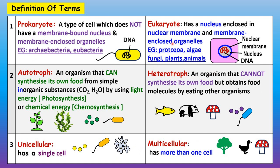We've also discussed the definitions of prokaryote, eukaryote, autotroph, and unicellular versus multicellular. A prokaryote is a type of cell which does not have a membrane-bound nucleus and membrane-enclosed organelles like mitochondrion and rough endoplasmic reticulum. The DNA is exposed, floating in the cytoplasm in a space called the nucleoid.